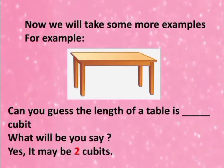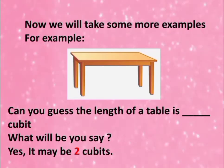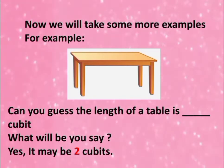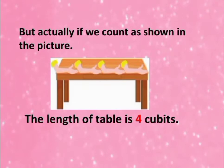Now we will take some more examples so your ideas will be clear. See here — for example, see in the picture, it is a table. Can you guess the length of the table in cubits? It may be 2 cubits, 3 cubits, or 4 cubits. But actually, if we count as shown in the picture: 1, 2, 3 and 4 — it means the length of the table is 4 cubits.